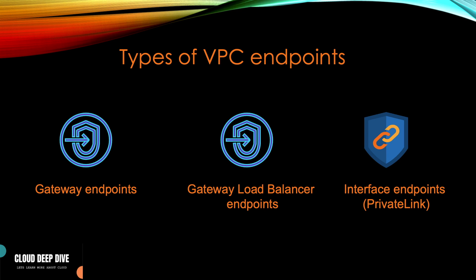Let's talk about what the different kinds of endpoints are. There are three types: one is the gateway endpoint, second is the gateway load balancer endpoint, and third is the interface endpoint, which is also known as PrivateLink. Gateway load balancer endpoints were already discussed in a previous video — I'll provide the link in the description. In today's video, we'll talk about gateway endpoints, and in my next video I'll talk about interface endpoints. Please subscribe and hit the bell icon to get notified.